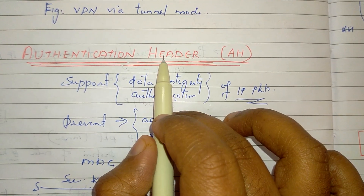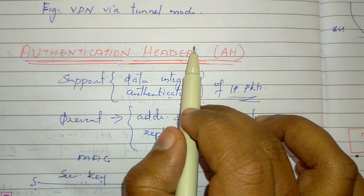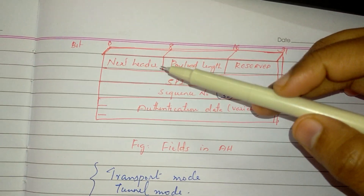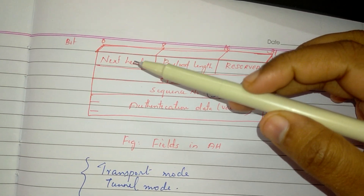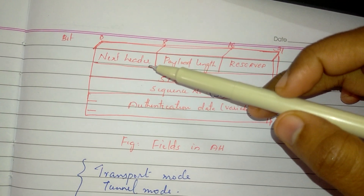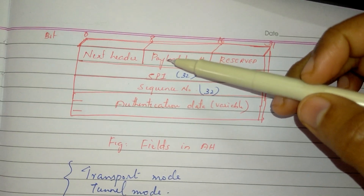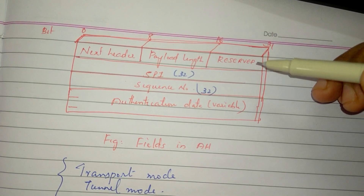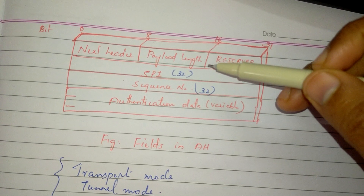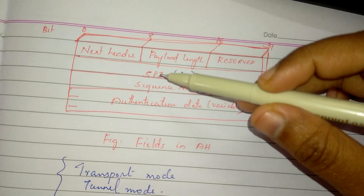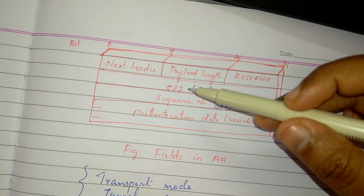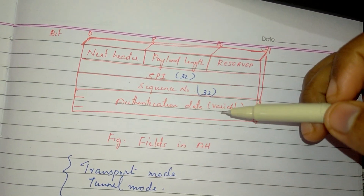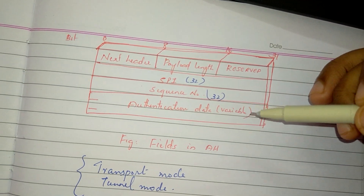The AH header fields are as follows: next header is an 8-bit field identifying the type of following header. AH length is a 16-bit field. The reserved field is for future use. The security parameter index is a 32-bit field that identifies the security association. The sequence number is a 32-bit field. The authentication data is a variable-length field containing the MAC.